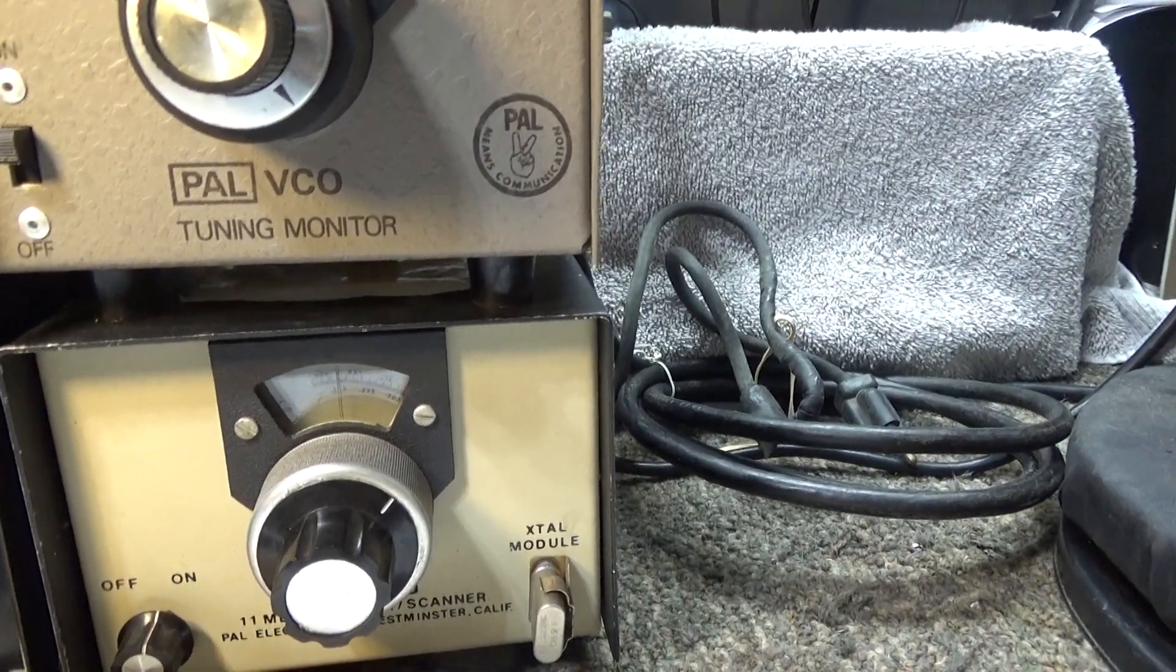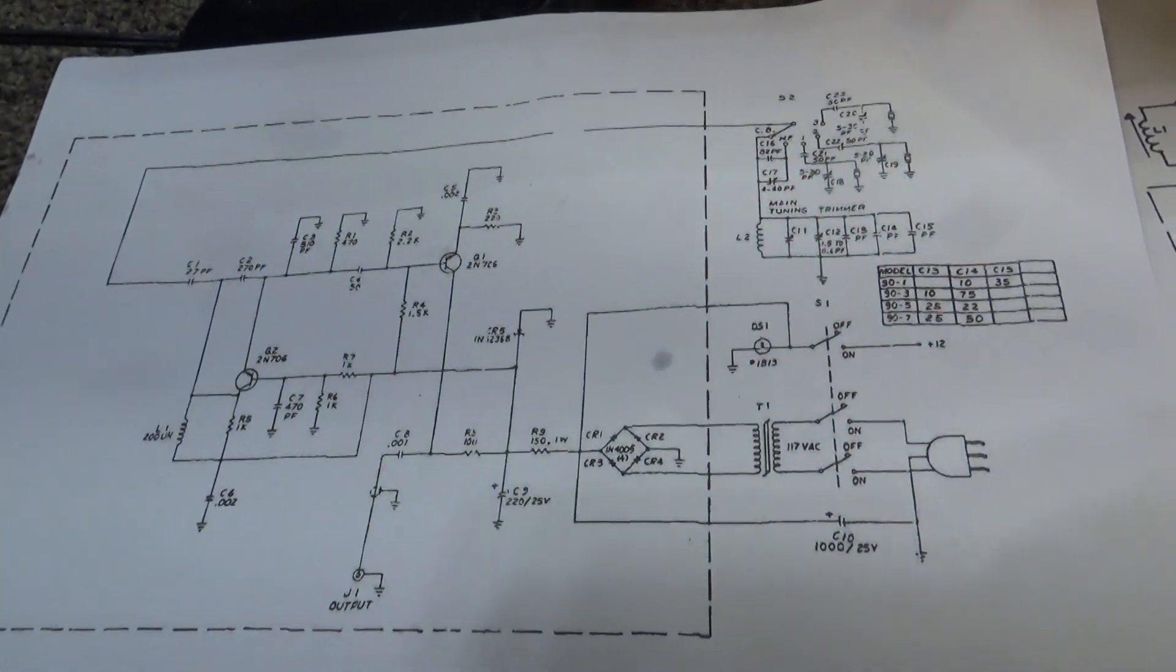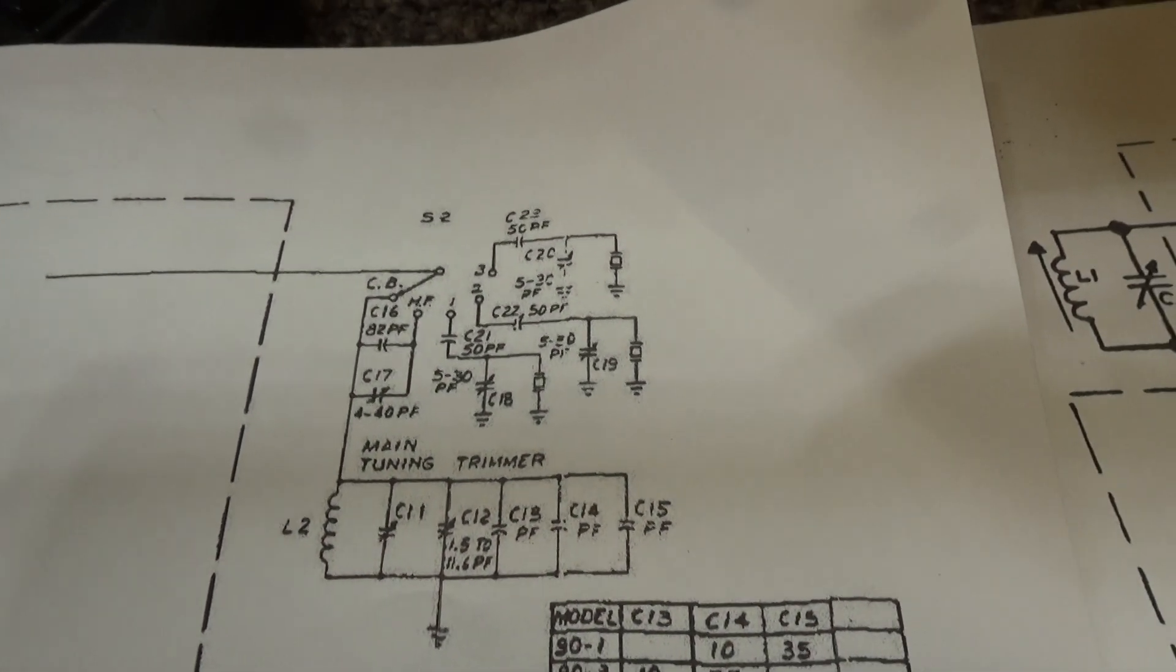You can use them on SSB because they're stable enough to do that. Siltronics VFOs don't use a crystal, they just use a bunch of capacitors and coils. Here's the schematic of the Siltronics VFO and over here is all the capacitors and coil that they use to vary the frequency and make up the frequency.